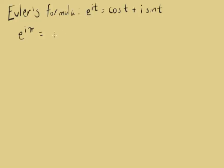Okay, so according to this formula, that's going to be cosine of pi plus i times the sine of pi. Well, cosine of pi is negative 1 and sine of pi is 0. So we just get negative 1 plus 0, negative 1.